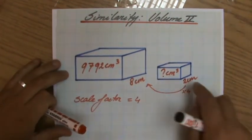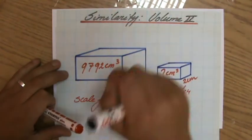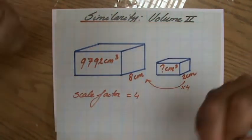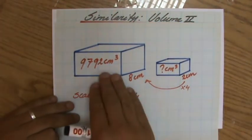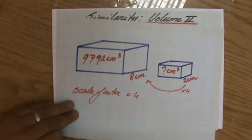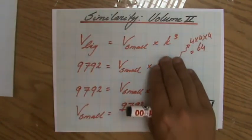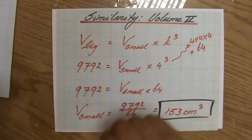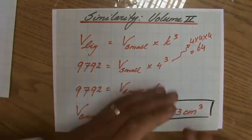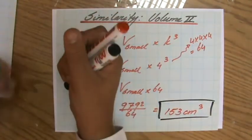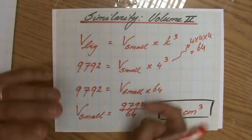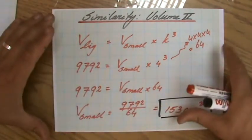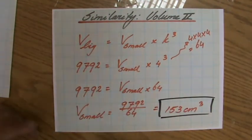Similarity involving volume: you look at the scale factor to the power 3. If the length is 4 times the small, then 4 to the power 3 times the volume of the smaller one gives you the volume of the bigger one. There are other ways of solving this problem, but I think this one makes the most sense.